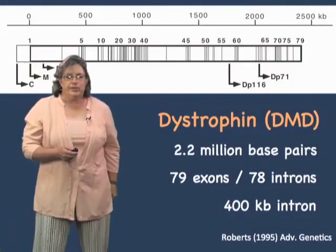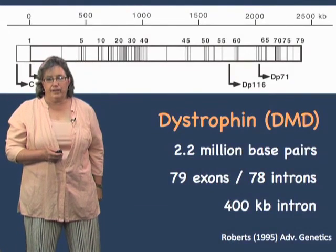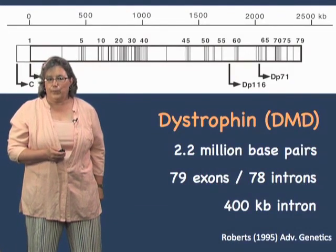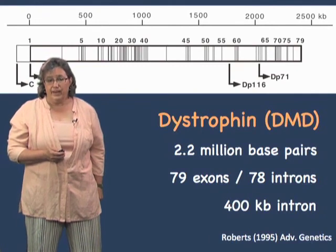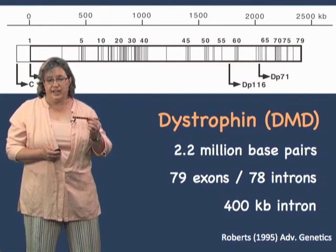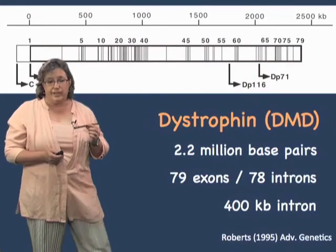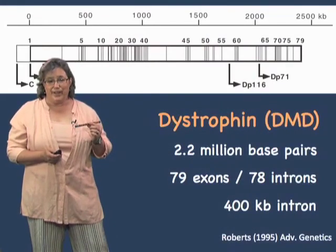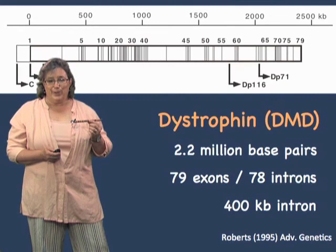So you've just seen how long dystrophin RNA is — that was a 99.4-foot rope. Now once all of those introns are removed, this is the size of the messenger RNA. This messenger RNA is very long — it is a 17,000 base messenger RNA — but it is less than 1% of the original RNA that was transcribed. Really pretty amazing.